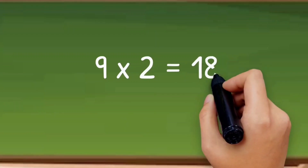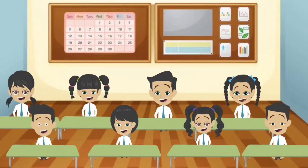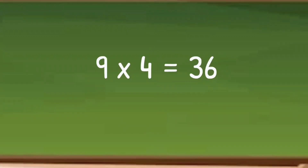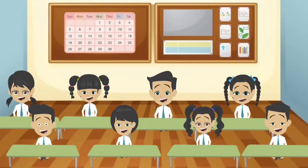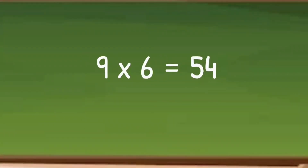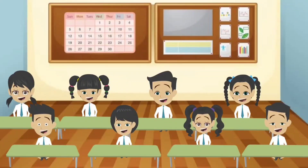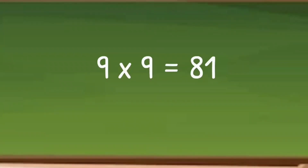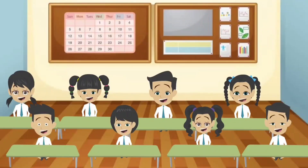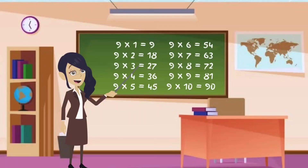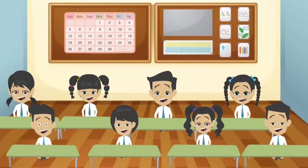Let's learn table of 9. 9 ones are 9. 9 twos are 18. 9 threes are 27. 9 fours are 36. 9 fives are 45. 9 sixes are 54. 9 sevens are 63. 9 eights are 72. 9 nines are 81. 9 tens are 90.